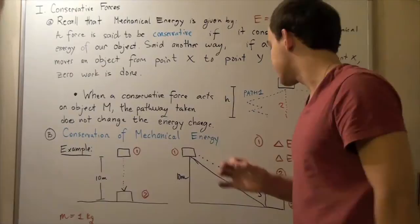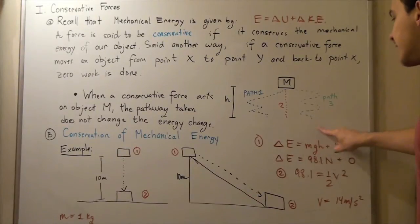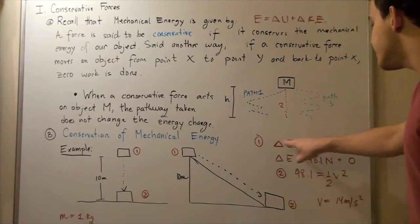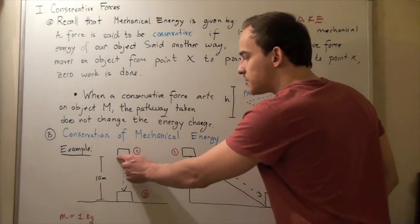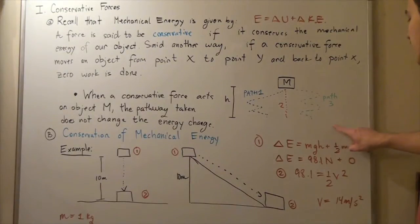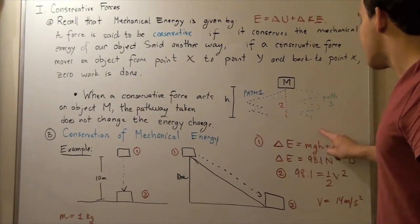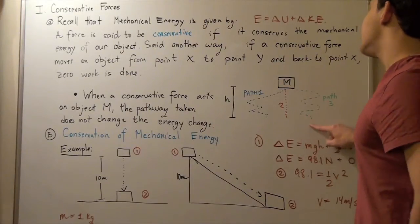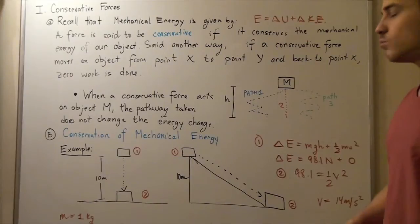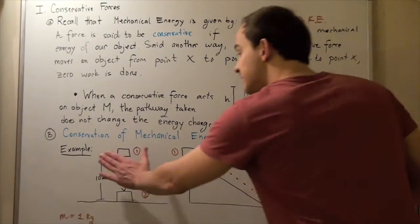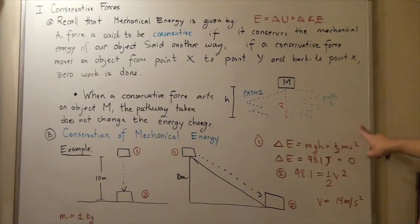In each case, a conservative force acts. The change in energy equals potential energy plus kinetic energy of the system. When the object is ten meters above the ground, it is stationary — velocity is zero — so there is no kinetic energy. All the energy is potential energy: mass times g times h. With mass = 1 kg, h = 10 m, and g = 9.81 m/s², the energy in both cases is 98.1 joules.